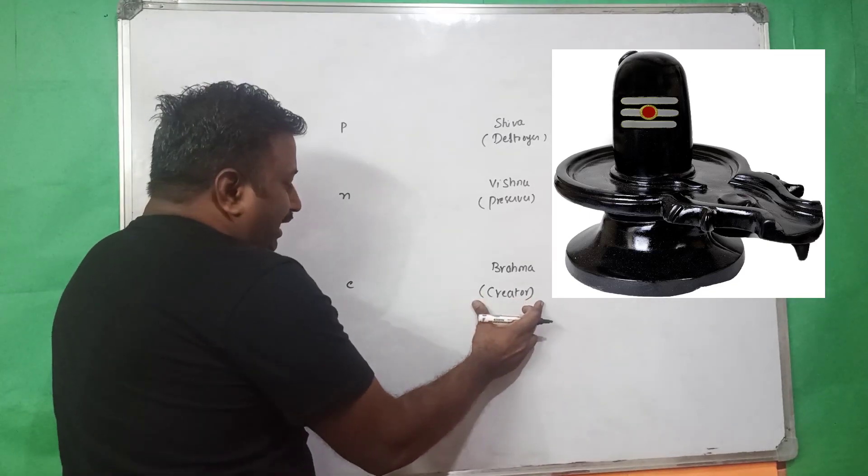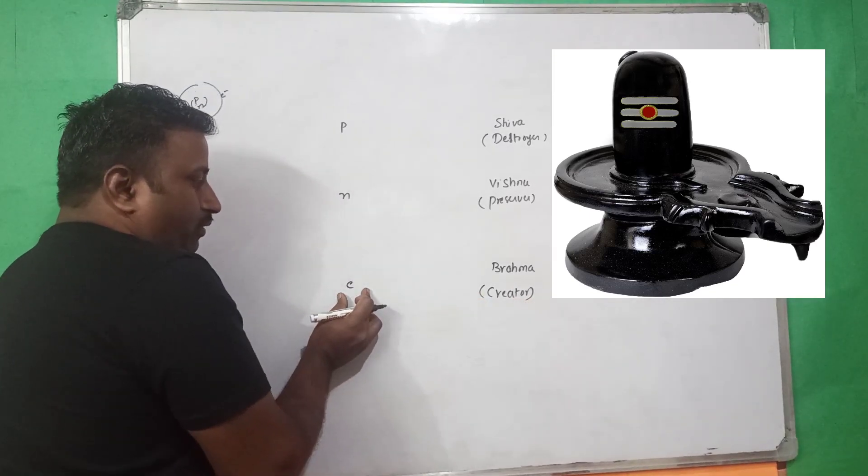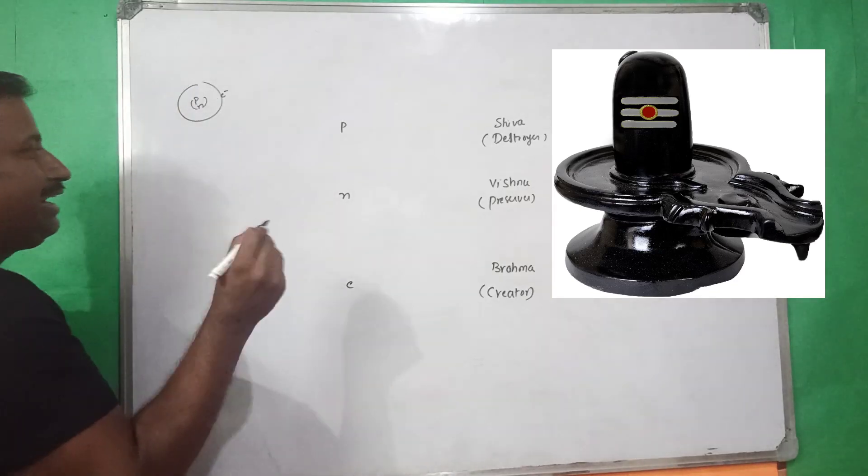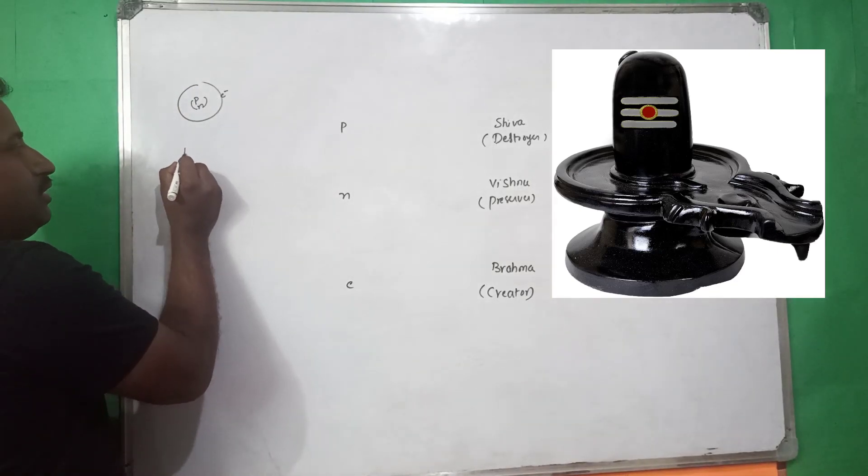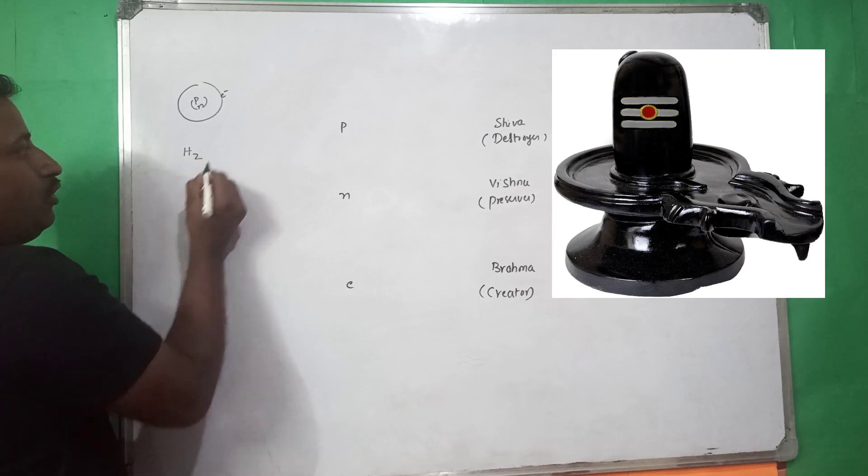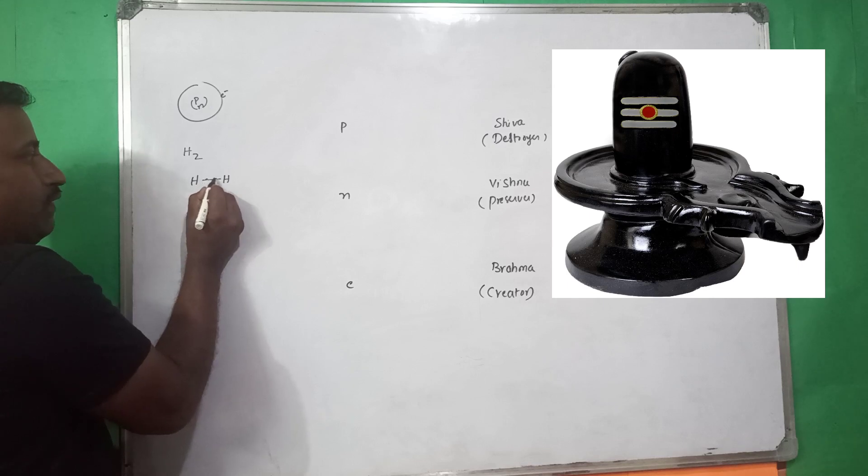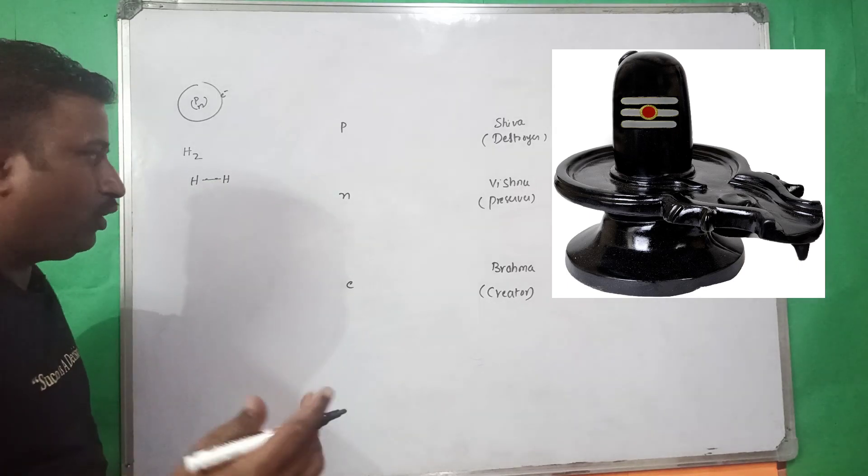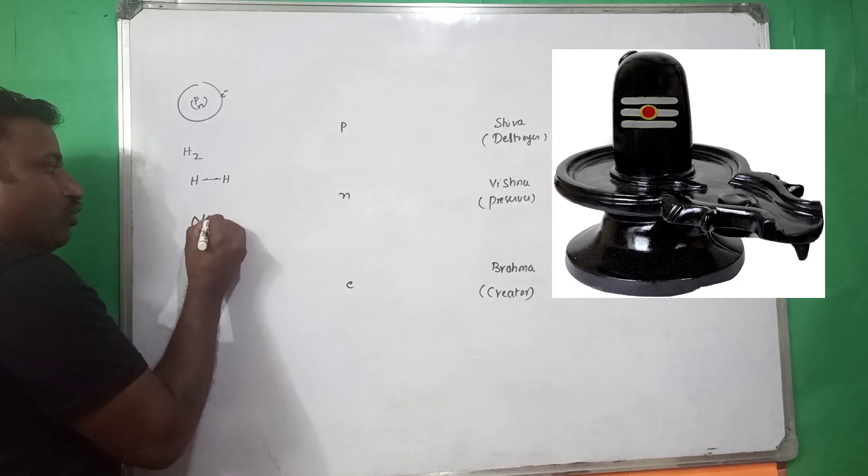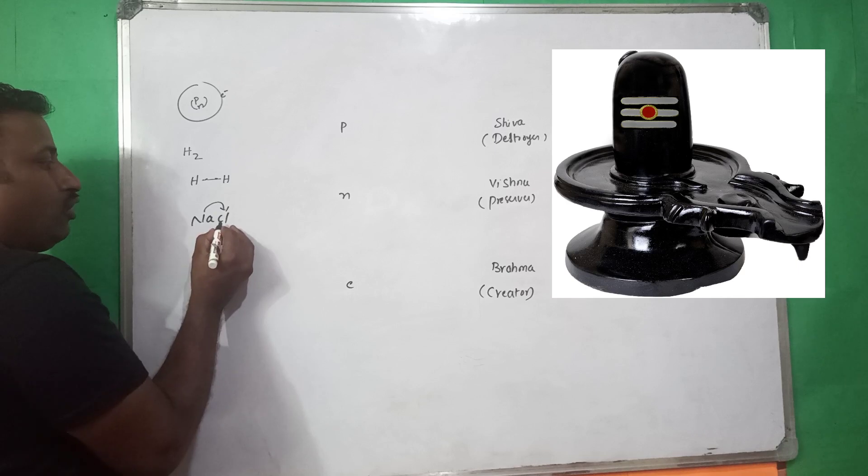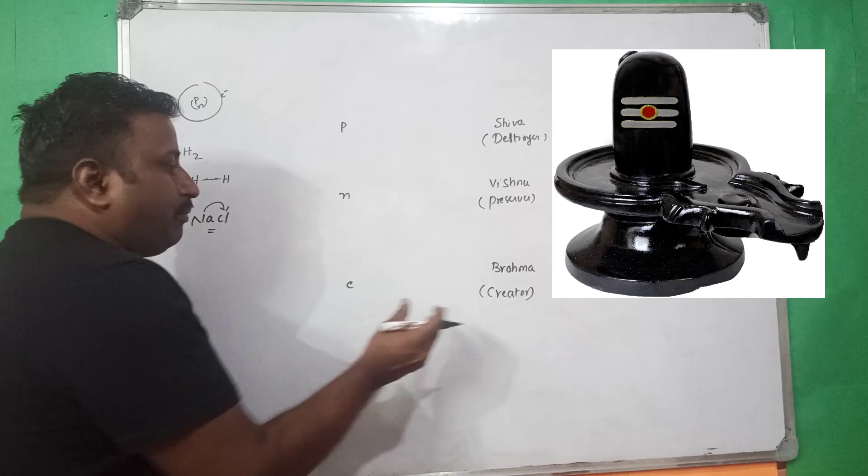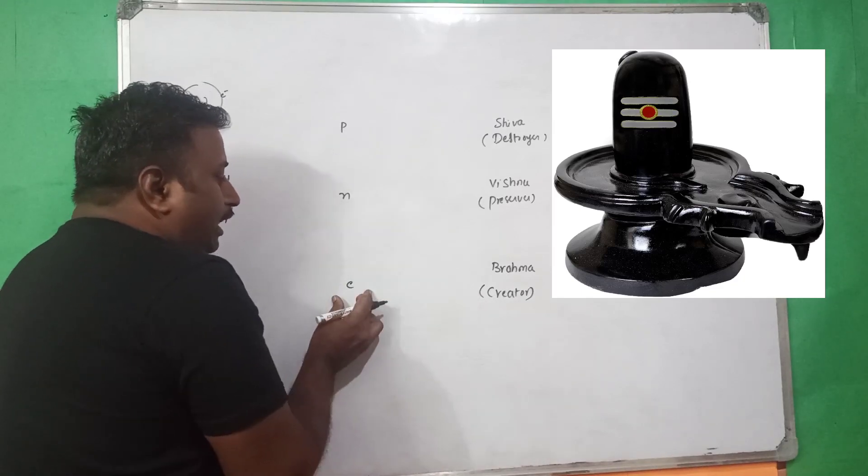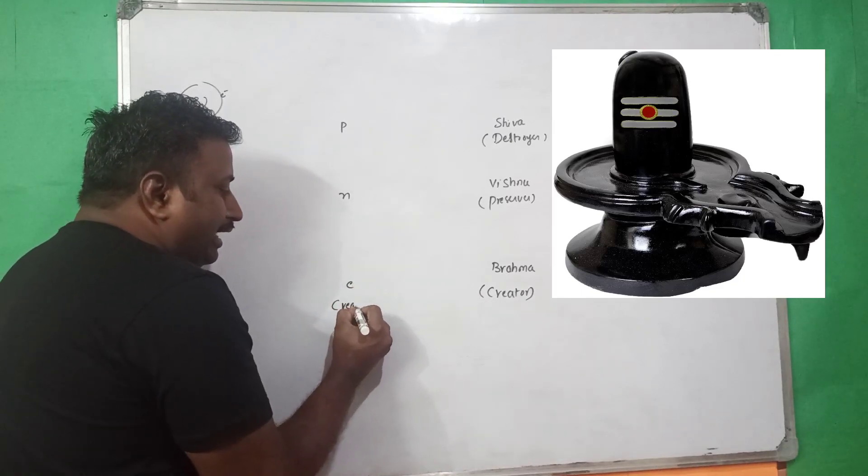Here, the Brahma is a creator as like electron. Without electron, you can't create anything because we have to form hydrogen molecule. Two hydrogen atoms must share electrons. Without the presence of electron, you can't create hydrogen molecule. If you want to create sodium chloride, sodium must transfer electron to chlorine. So it will form NaCl. As like Brahma, a creator, the electron also creator.